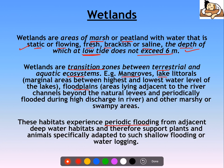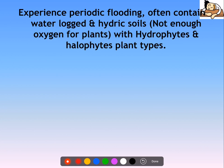Wetlands experience periodic flooding from adjacent deep water habitats, and they support those plants and animals which are adapted to flooding and water logging. The plants found here are hydrophytes — plants which can survive in water-logged conditions — and halophytes, which are salt-loving water plants. Since these are water-logged areas with hydric soils (soils with low oxygen content), we find hydrophytes and halophytes in these wetlands.